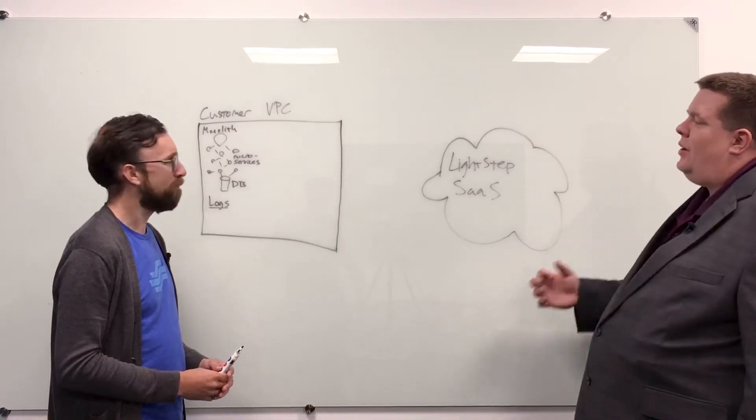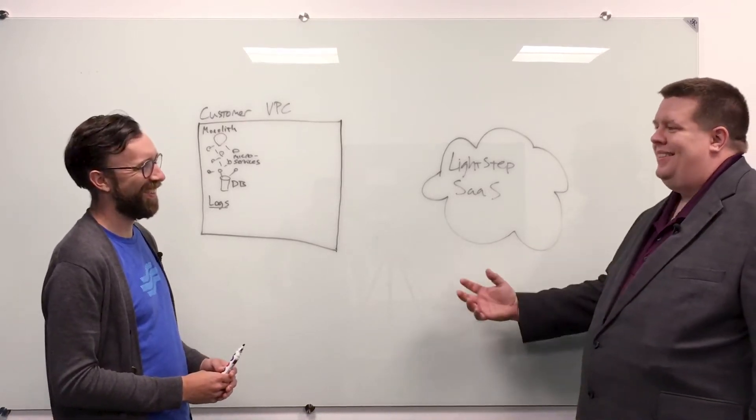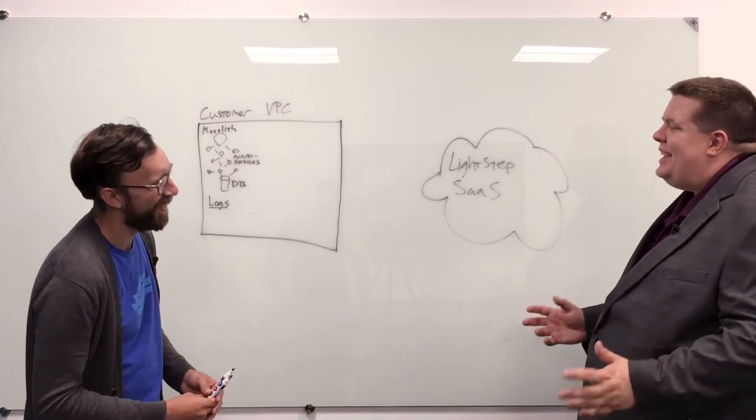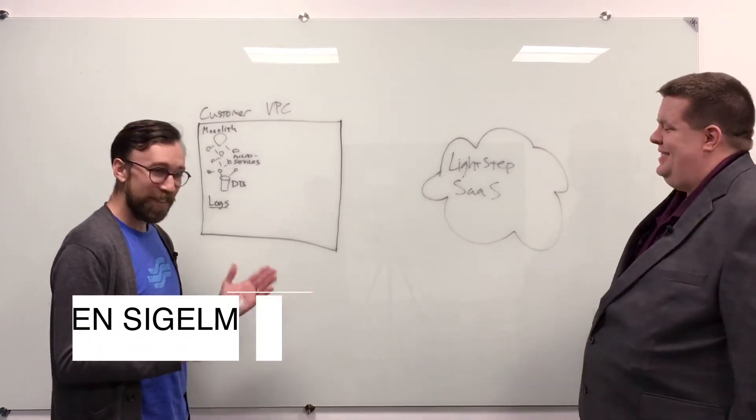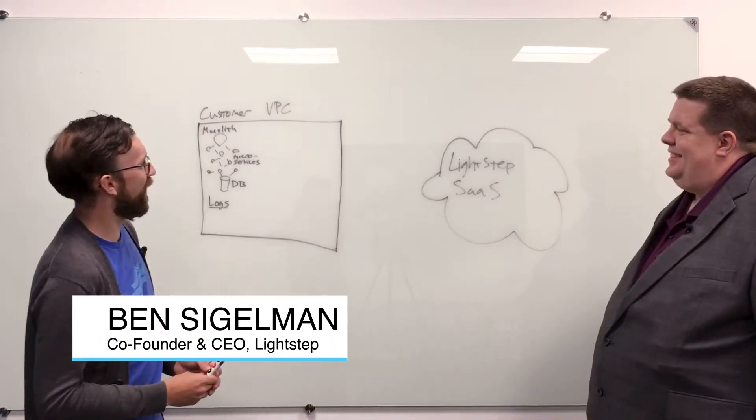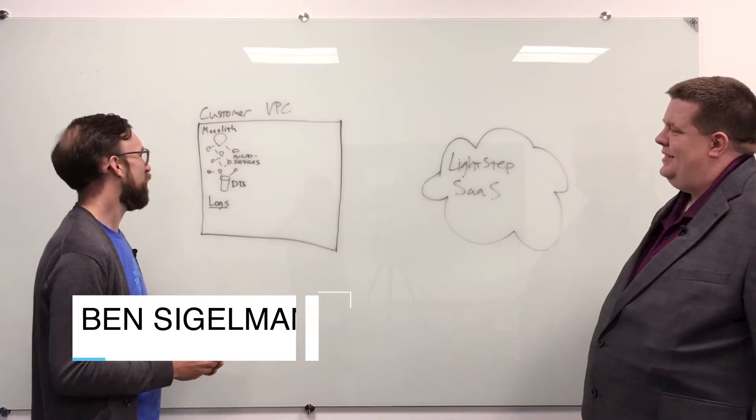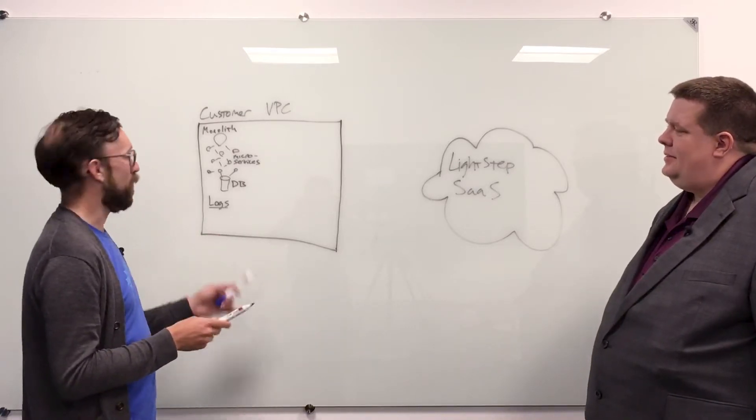So on the board we have the beginnings of an architectural diagram for the product you sell. Tell us what we're looking at and how it works. Great, so this is the beginnings, and I've left out the kicker. Let me talk about the systems that we typically observe.